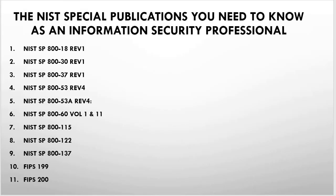These are the NIST Special Publications you need to know as an information security professional: NIST SP 800-18 Revision 1, 800-30 Revision 1, 800-37 Revision 1, 800-53 Revision 4, 800-53A Revision 4, 800-60 Volume 1 and 2, 800-115, 800-122, 800-137 Revision 1, and FIPS 199 and FIPS 200.